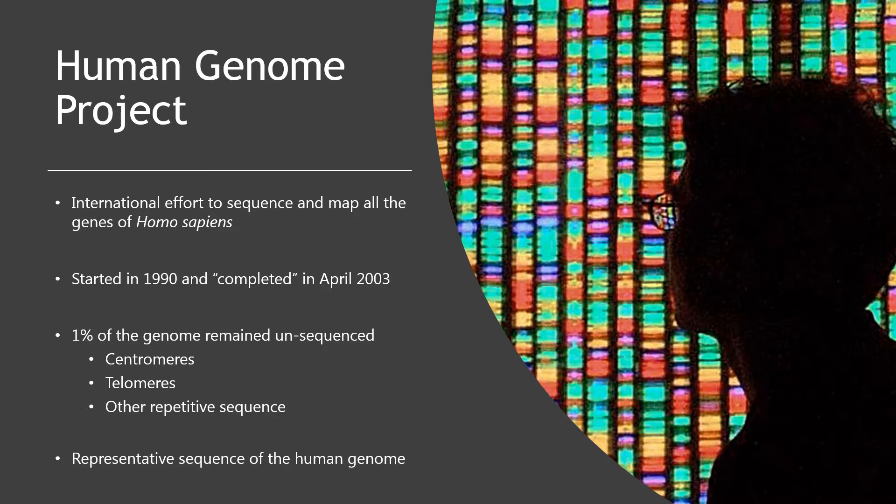The Human Genome Project is an international research effort to sequence and map all of the genes of Homo sapiens. The project began in 1990, initially headed by James Watson at the U.S. National Institutes of Health. Largely due to his disagreement with his boss Bernadine Healy over the issue of patenting genes, he was forced to resign in 1992. He was replaced by Francis Collins in April 1993, and the name of the center was changed to the National Human Genome Research Institute in 1997. A working draft of the genome was released in 2000 and a complete one in 2003.